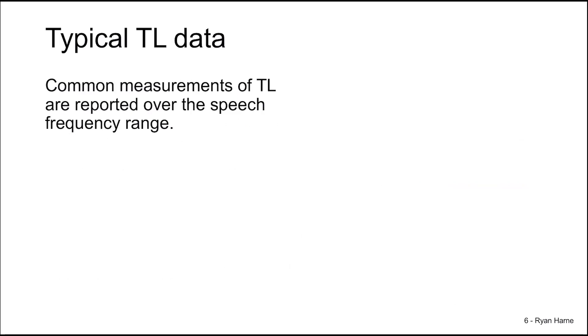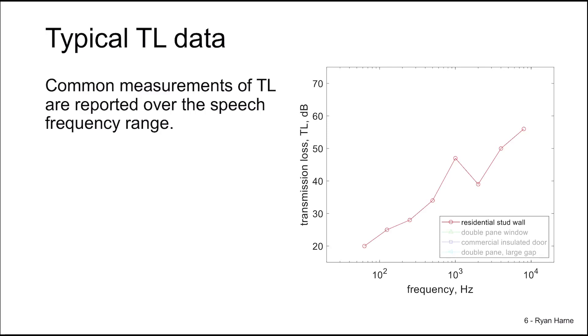Typical transmission loss data is reported over the frequency range of human speech. So from around 125 Hz to 4 kHz, the specific example for a residential stud wall goes down to 63 Hz and up to 8 kHz. We see the typical trends of the transmission loss for a panel. A rise up, a coincidence drop, and a rise up again.